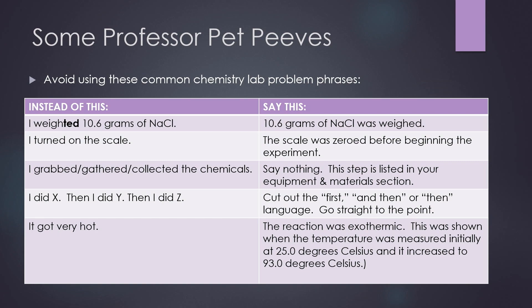Next, you don't want to say something like, I turned on the scale. That is an obvious step that is unnecessary and it goes against the rule of being concise in your lab reports. Instead, you can say something like, the scale was zeroed before beginning the experiment. This shows that you're using your instruments correctly. This kind of detail is important for precision in your lab reports.